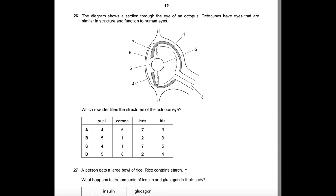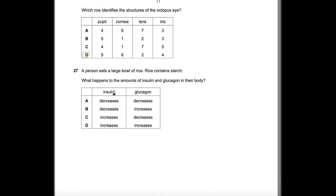Question 26: The diagram shows a section through an octopus eye, which is similar in structure and function to the human eye. Part 2 is the lens, so we choose between B and D. Part 4 is the iris, part 5 is the pupil, and part 6 is the cornea. Answer: D.